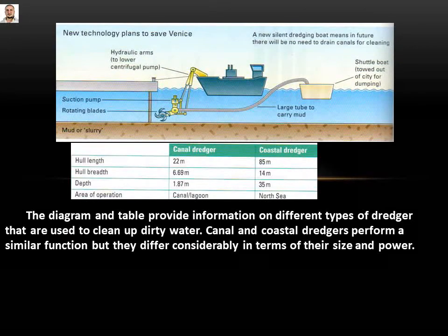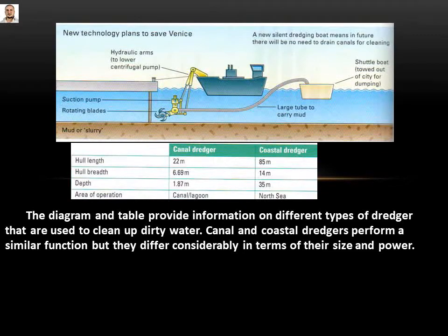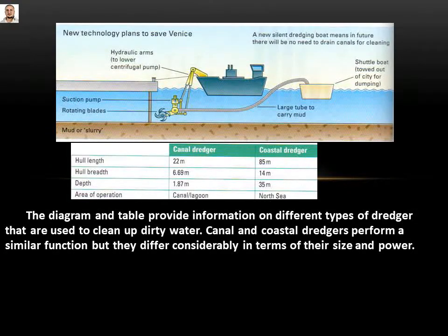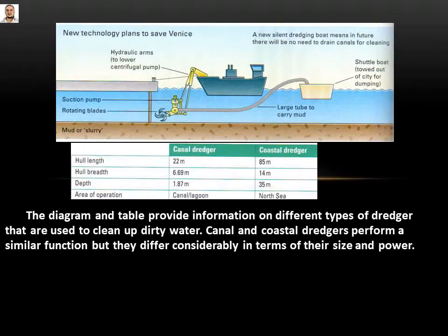Let's come to the first paragraph. We say 'the diagram and table' — we talk about both because we have a table here. The diagram and table provide information on different types of dredger that are used to clean dirty water. Canal and coastal dredgers perform a similar function.